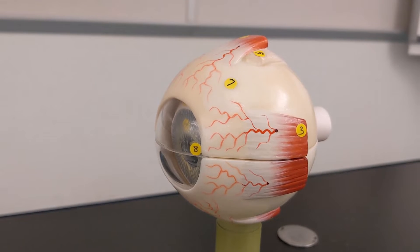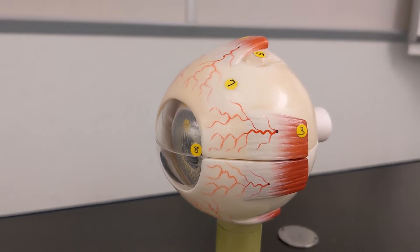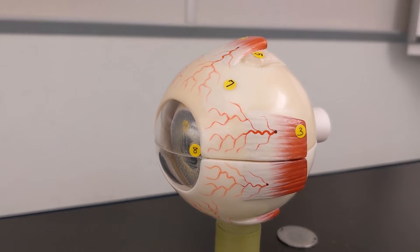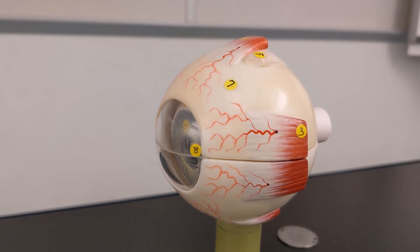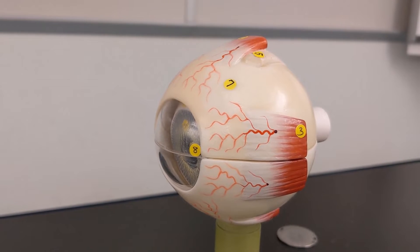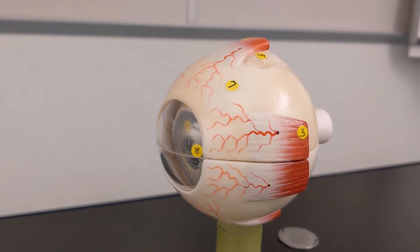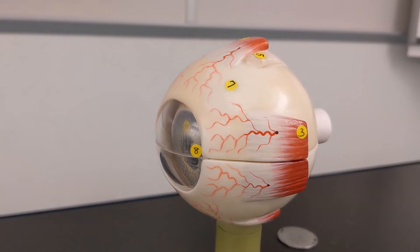Now I want you to tell me what nerve controls each of these. The way that's easiest to remember this I think is to remember four of the six extraocular muscles are controlled by the oculomotor nerve. Two of them are not. Just remember the two that aren't.